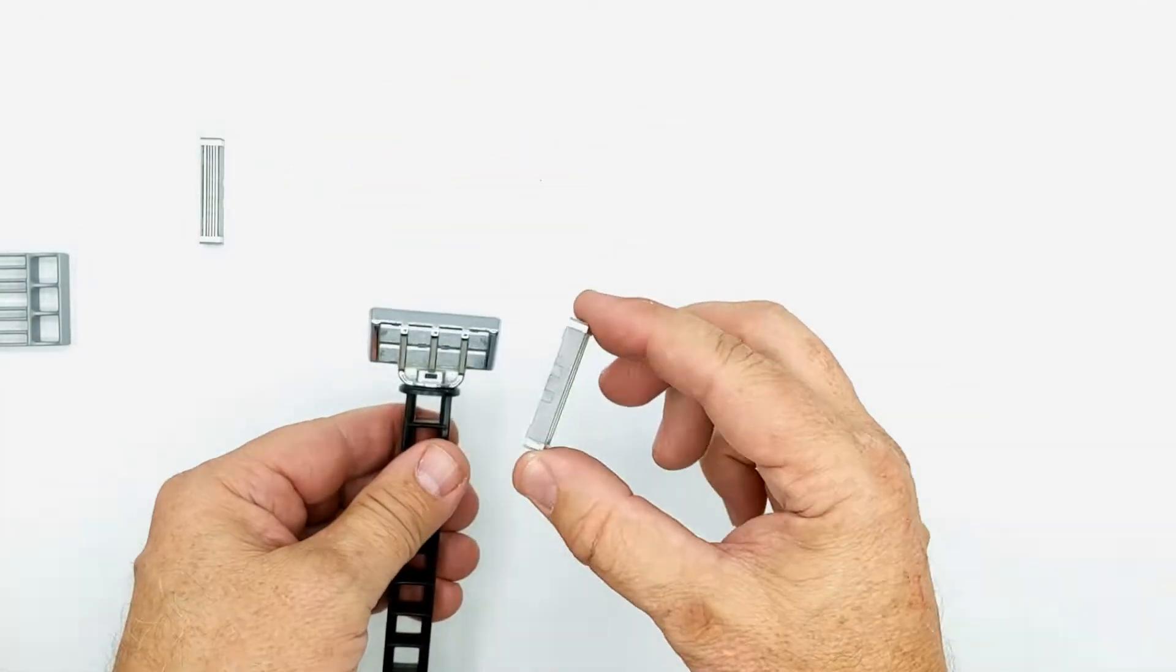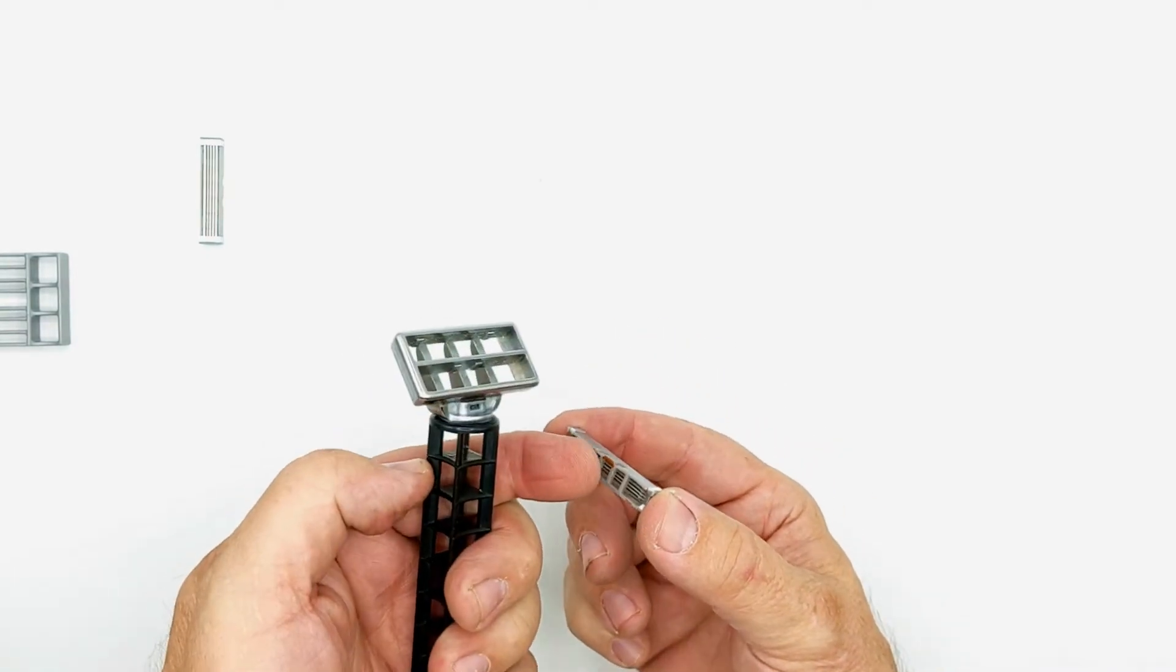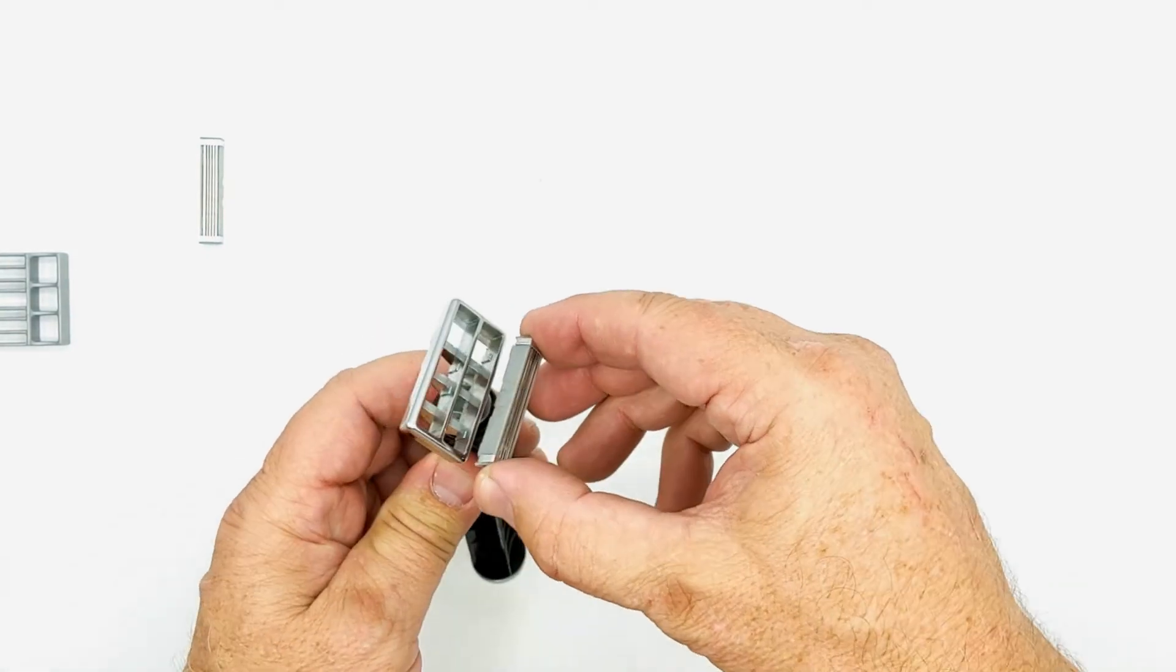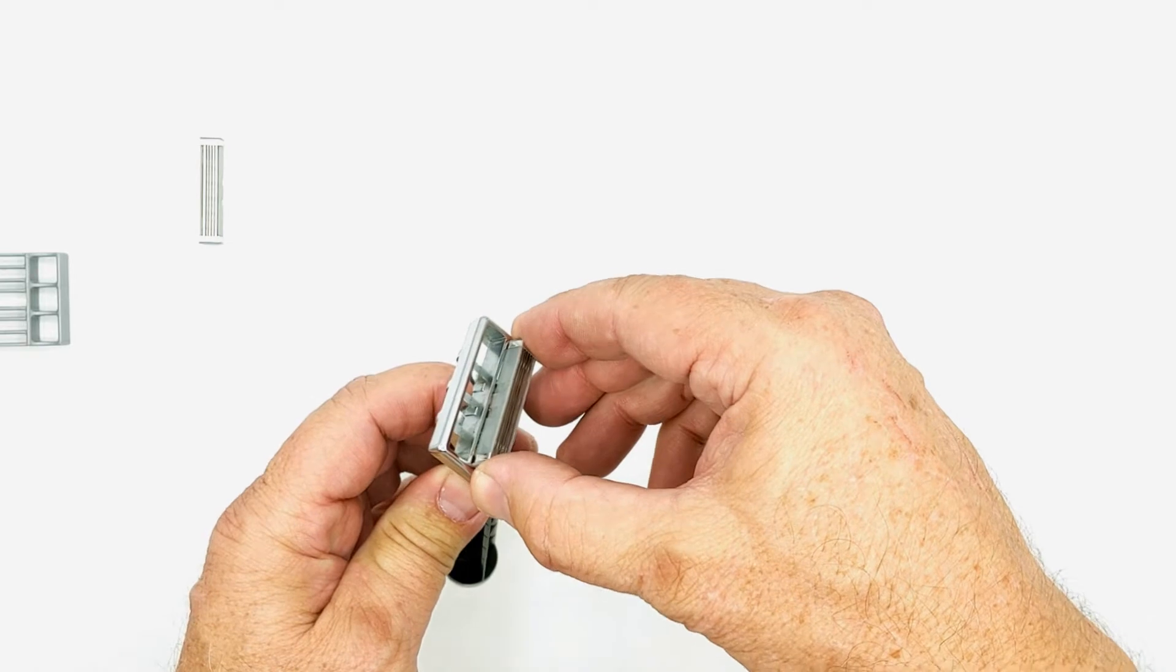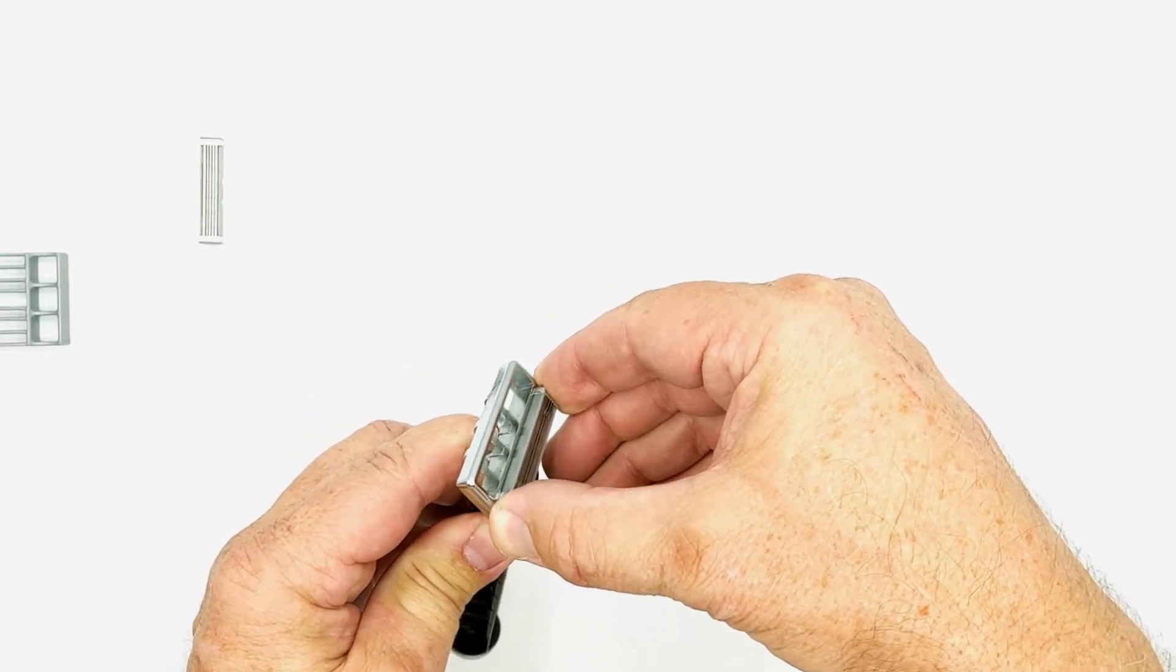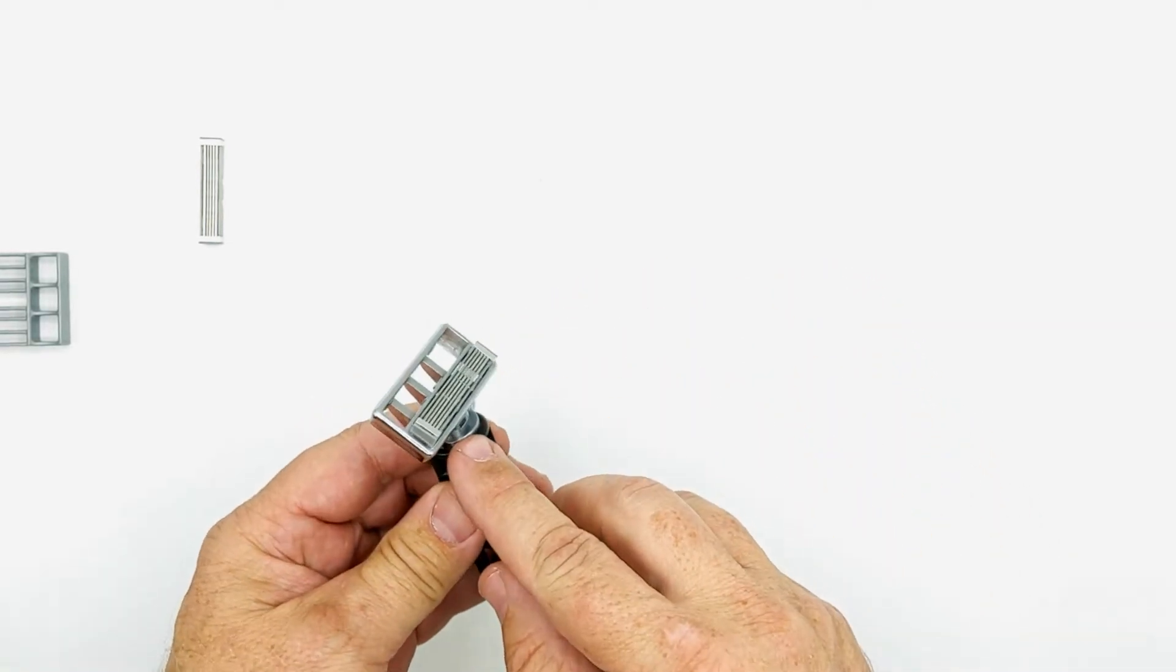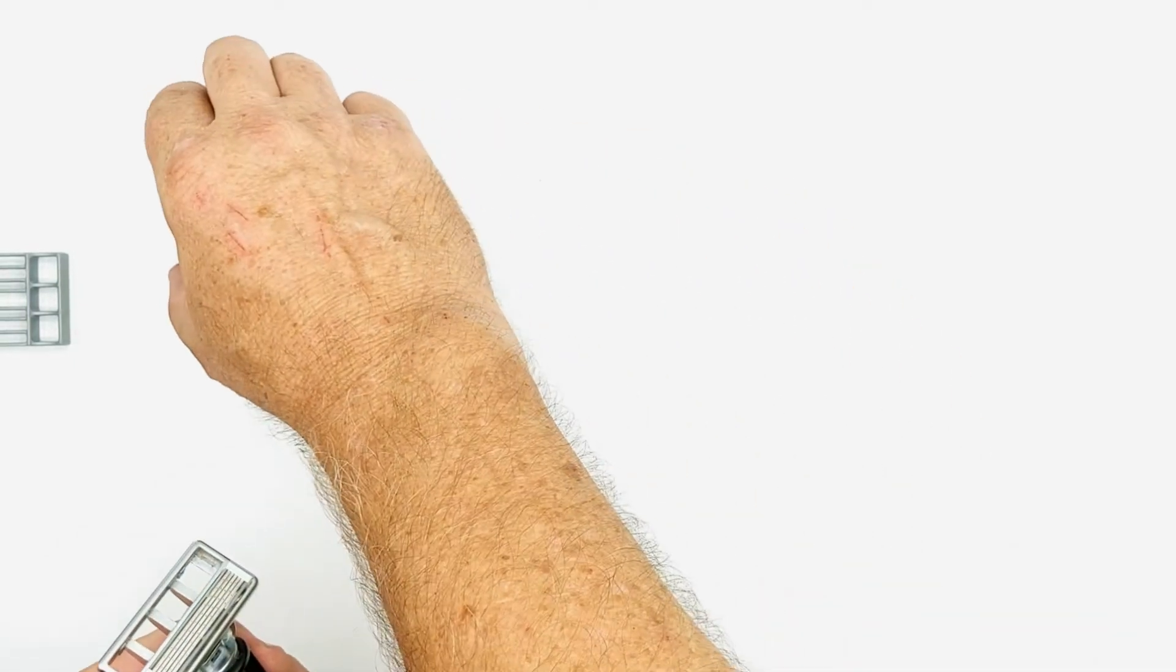Take the new cartridge and the orange dot that you can see here will go towards the center of the shaving head. You'll gently place it in the shaving head without pushing it in much farther than this.